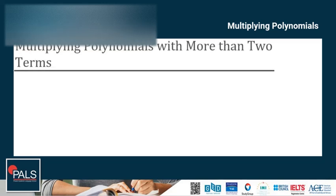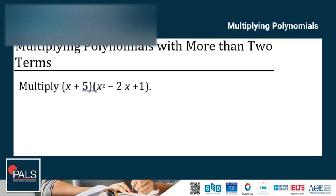Let's proceed to multiplying polynomials with more than two terms. Some questions on the GED test may ask you to multiply two polynomials with many terms. In questions like this, keep your work organized — there will be a lot of terms to keep track of — and always remember to distribute every term. Let's try an example: multiply x plus 5 times x squared minus 2x plus 1.